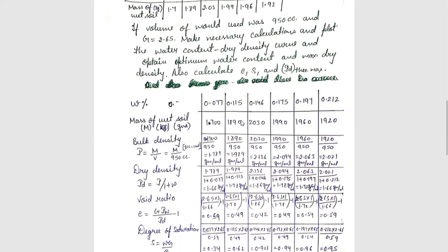M is given in different water content. V is constant, which is 950 cc. If I talk about 1 cc equals to 1 ml, then it is 1 cc equals to 1 ml. So I can call it 950 cc and 950 ml. For particular mass of wet soil, what do I do?